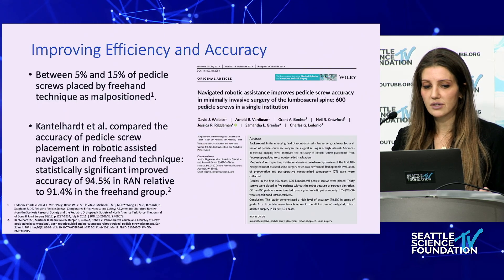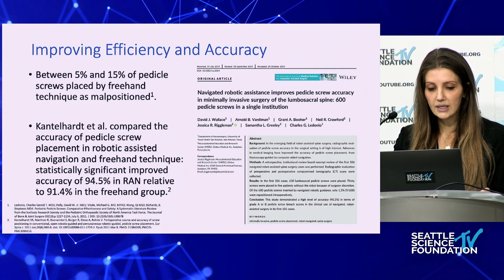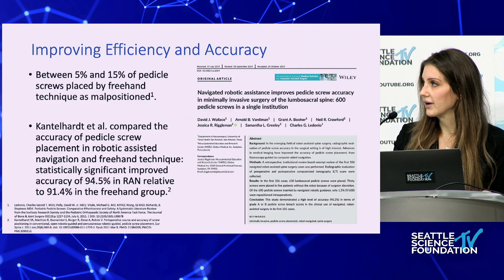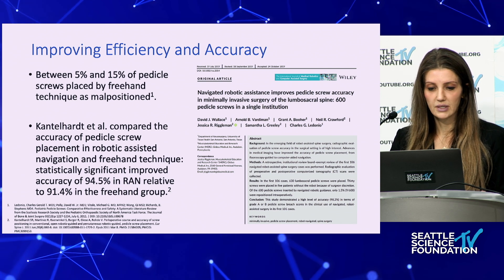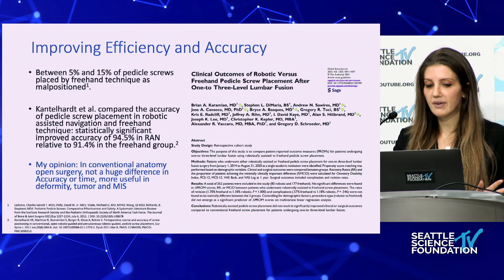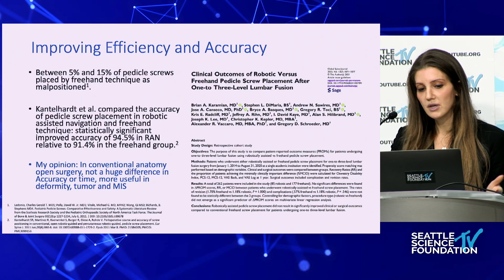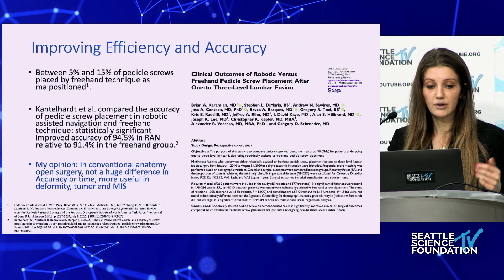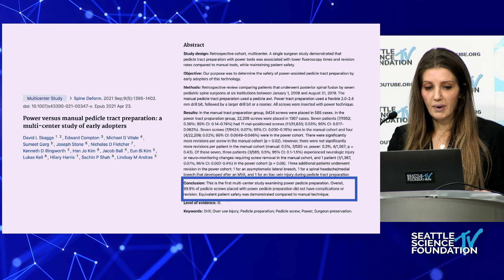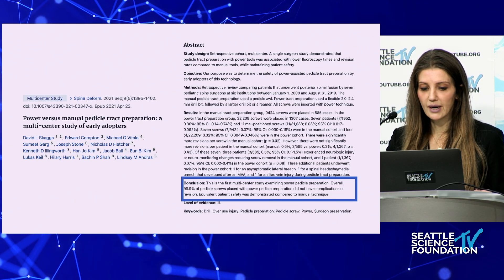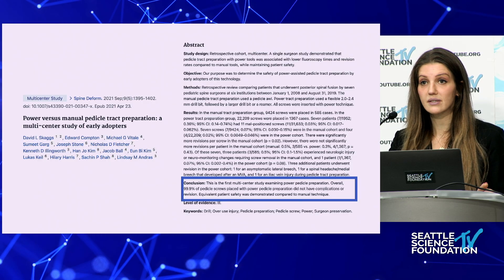Improving efficiency and accuracy is really important. Generally, between five to 15 percent of pedicle screws are malpositioned freehand. That does go down with experience, however the robotic navigation group was still slightly better than the freehand group. In my opinion, for conventional anatomy open surgery there's not a huge difference. However, for minimally invasive surgery, deformity surgery, or revision surgery, that's where the robot really shines — in terms of decreasing radiation and increasing the accuracy of screw placement.